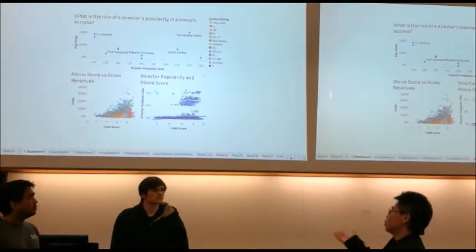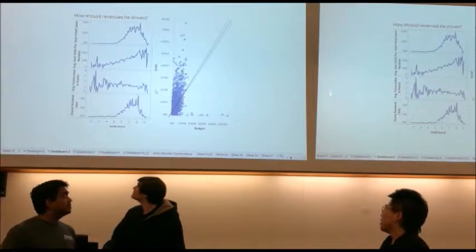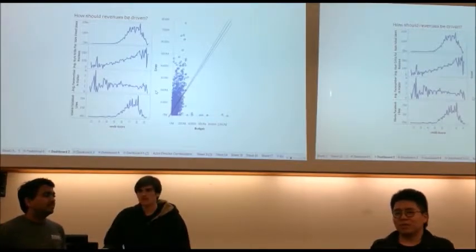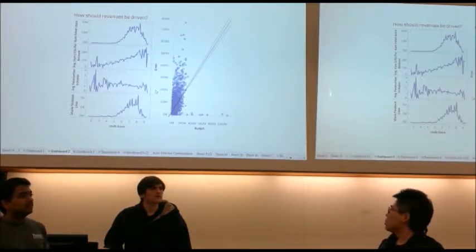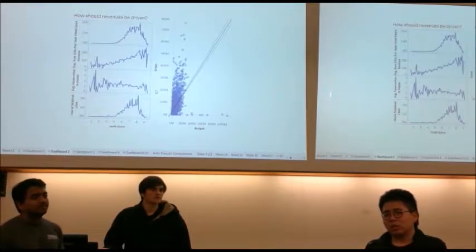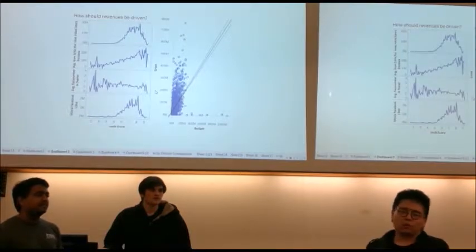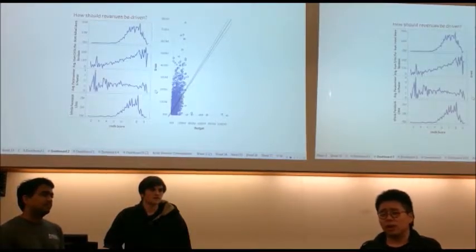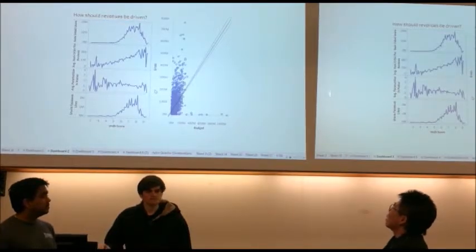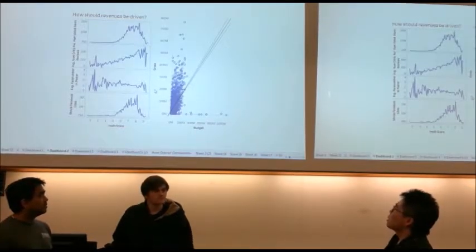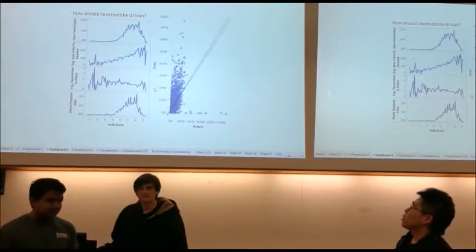Then we turned to the budget. We did find something on budget. At a very low level, there's a significant relationship between budget and growth. Growth is very sensitive at a low level of budget. Then we came to the other things, such as average numbers of critics and numbers of voters.